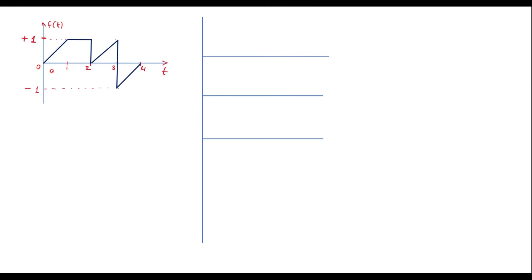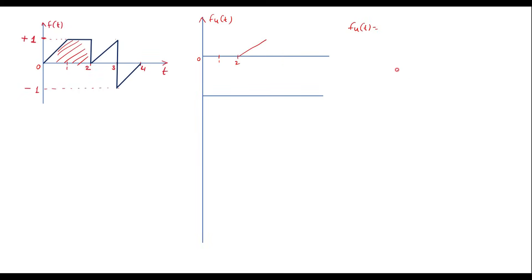By adding f1(t) + f2(t) + f3(t), we get the signal from 0 to 2. At t equal to 2, there is another ramp signal. I will call that f4(t), which is a ramp signal beginning at t equal to 2. Its slope is the same as f1(t), that is plus 1. So f4(t) is the same as f1(t) but delayed by 2 units: f4(t) = R(t − 2) = (t − 2)·u(t − 2).